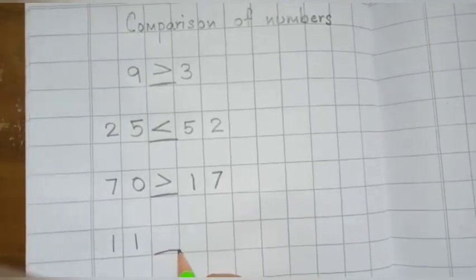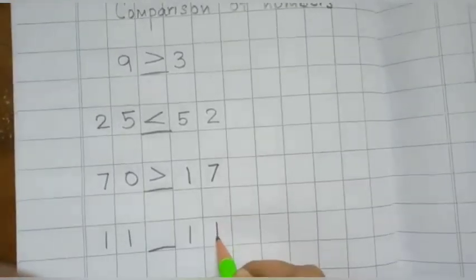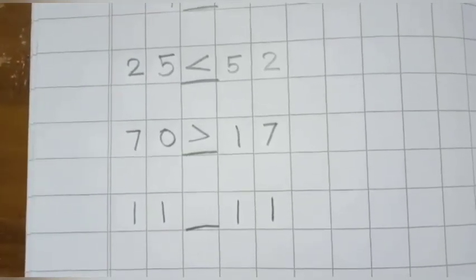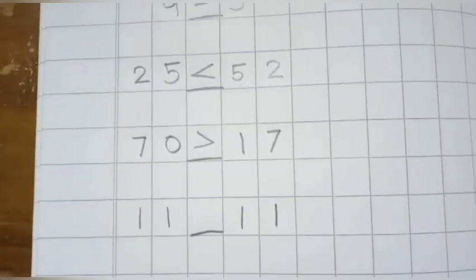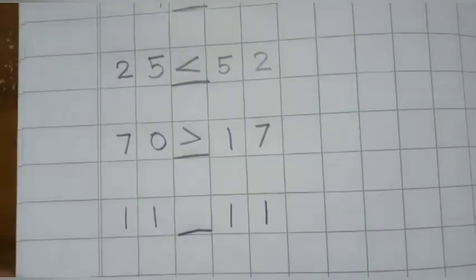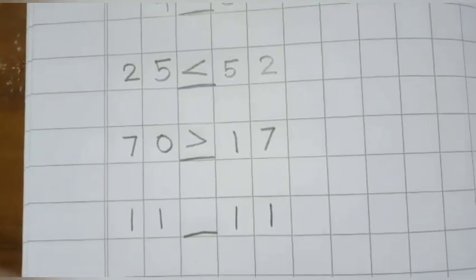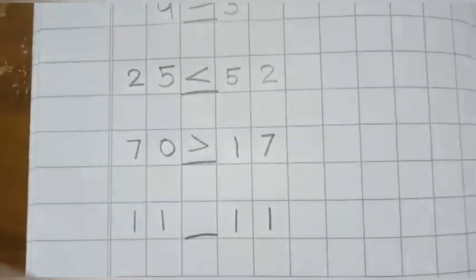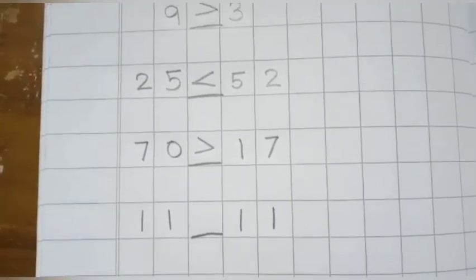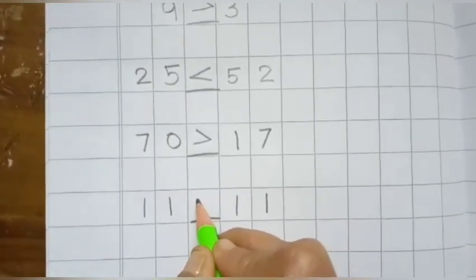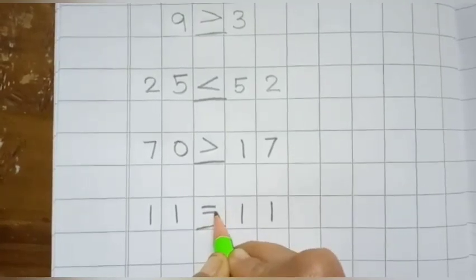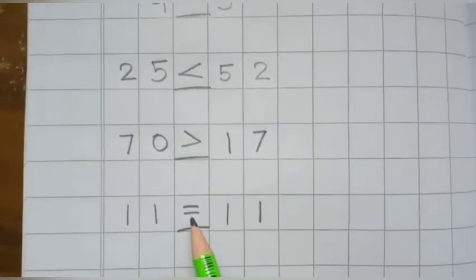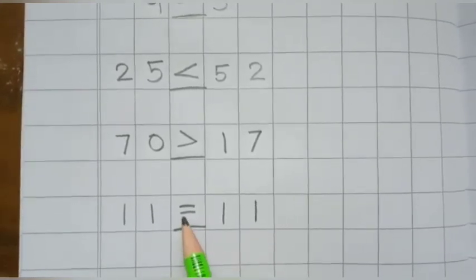On my left hand side I write 11, and on my right hand side also I write 11. Now look at these two numbers very carefully. On my left side I have written 11, and on my right side I have also written 11. These two numbers are the same. So when we get two numbers of the same value, we do not write greater than or lesser than — we write this sign: two sleeping lines. This is the sign of equal to. Equal to means same. 11 is equal to 11. So we write the equal to sign here.